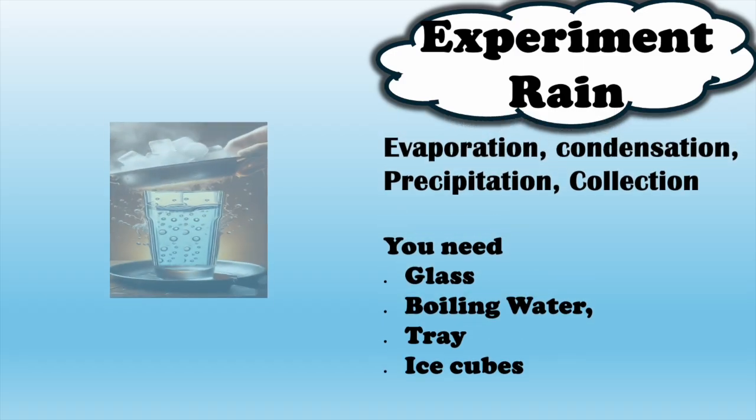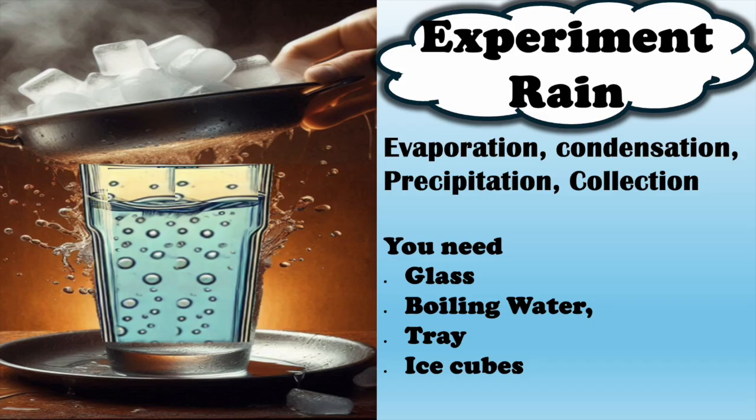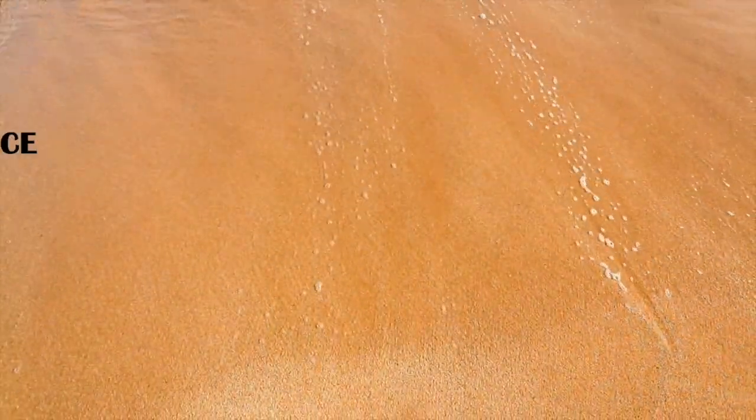You can also do a simple experiment to understand evaporation, condensation, precipitation, and collection. Pour hot boiling water in a glass and hold a tray of ice cubes above the steam. As water vapor reaches the tray, it cools down and condenses into small droplets that fall back down into the glass — this represents rain formation. Isn't it simple to understand how rain forms?